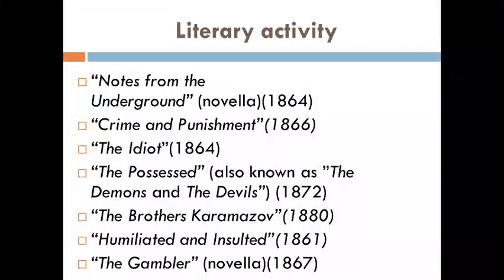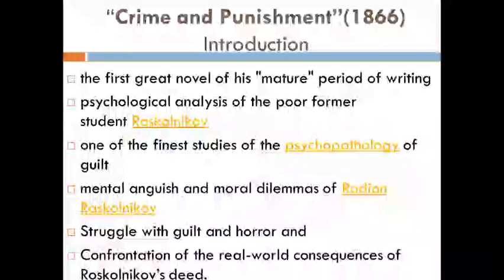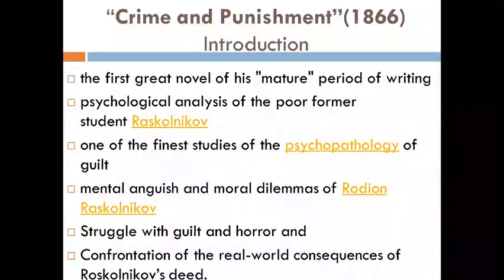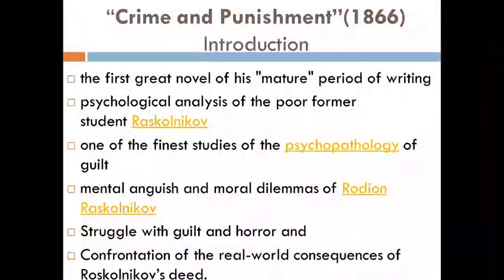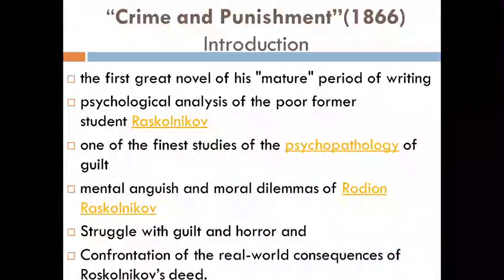Each of these works is famous for its psychological profundity, but we will focus especially on Crime and Punishment. It is the second of Dostoevsky's full-length novels following his return from ten years of exile in Siberia. Crime and Punishment is considered the first great novel of his mature period of writing, and since its publication it has been acclaimed as one of the supreme achievements in world literature.